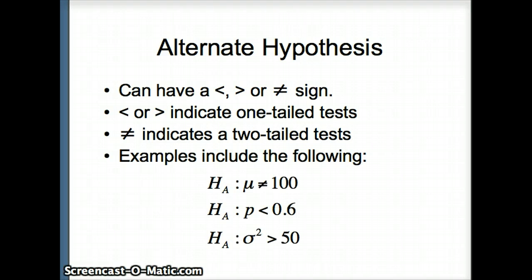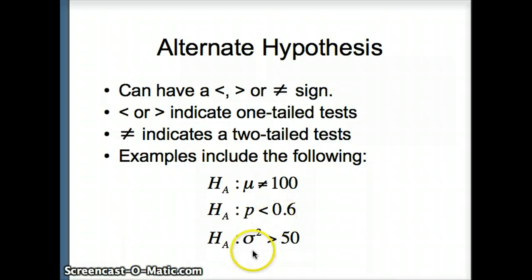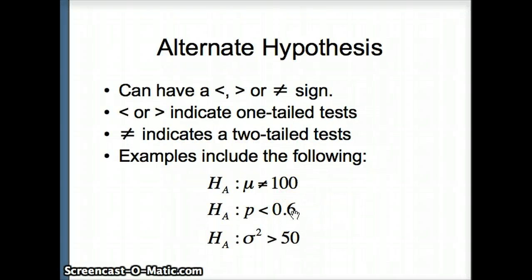Here are some examples. The notation I like to use for the alternate hypothesis is H sub a, though many authors use H sub 1. Potential alternate hypotheses include: mu is not 100 (a two-tailed test), p is less than 0.6 (a one-tailed test to the left), and sigma squared is greater than 50 (a one-tailed test to the right). Those are important ideas to keep in mind.